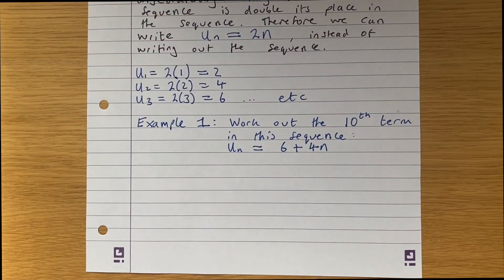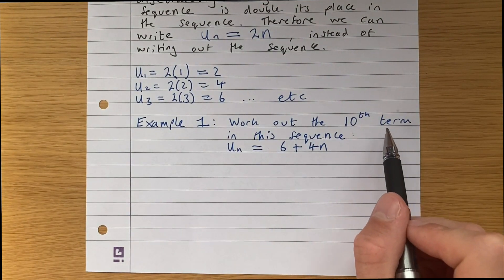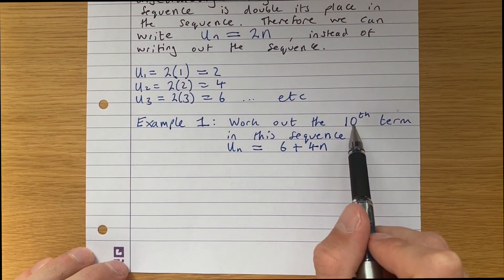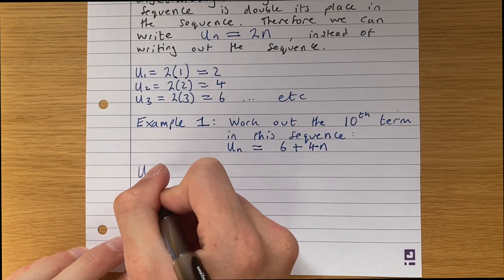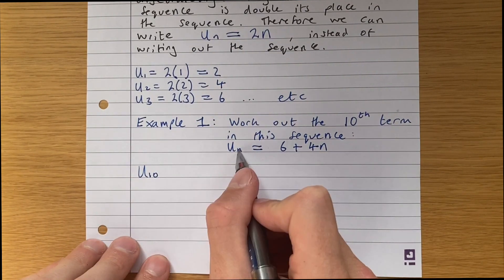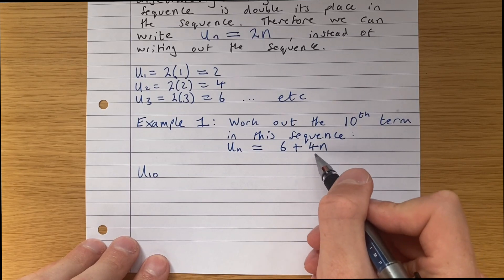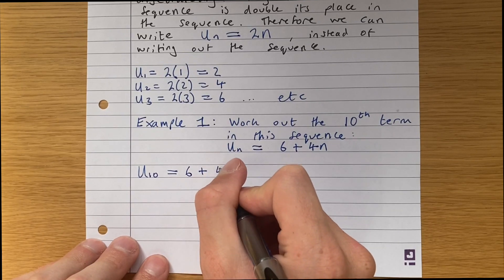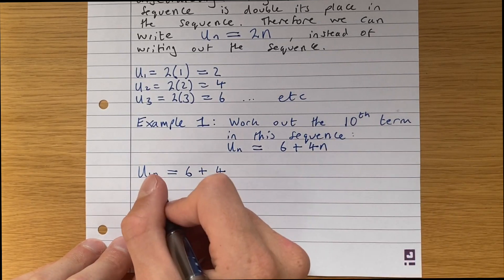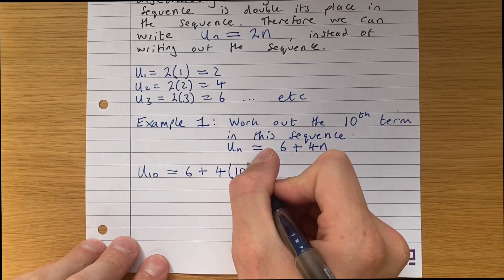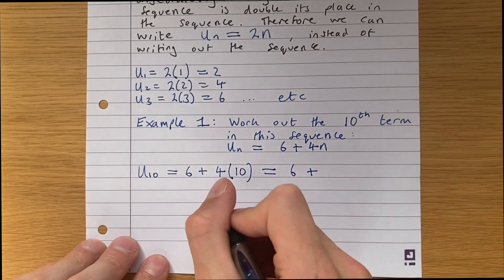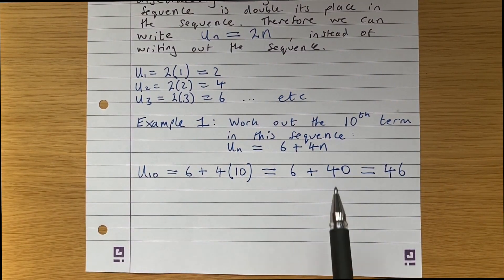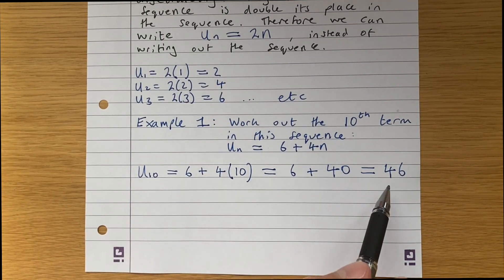So let's do an example to illustrate this. We're asked to work out the 10th term in the sequence u_n equals 6 plus 4n. Well, the 10th term is written u10 — that's just notation. When n is 10, all we do is plug in n equals 10 to this formula. So we get u10 is equal to 6 plus 4 times 10, which is 6 plus 40, which equals 46. So just from this expression, the 10th term in this sequence is 46.